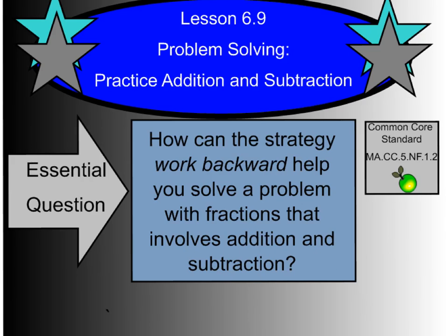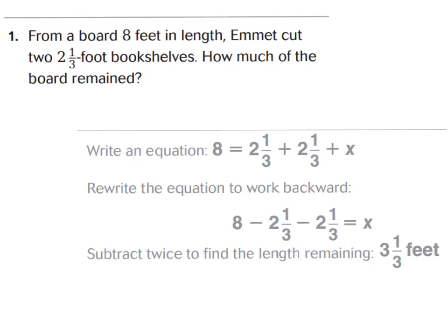Go ahead and turn in your GoMath book to Lesson 6.9. For number one, it says: from a board eight feet in length — that's the starting amount, eight feet — he's going to cut two groups of two and one-third. How much of the board remains? So we're subtracting; we're cutting from our eight feet.